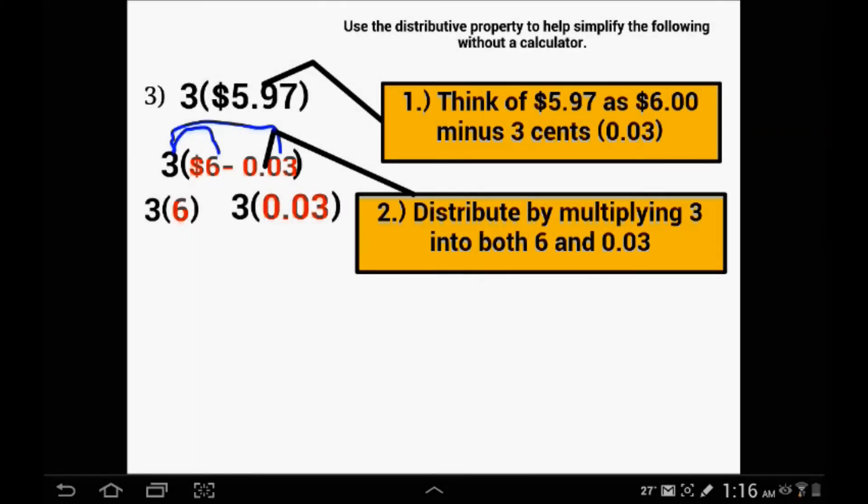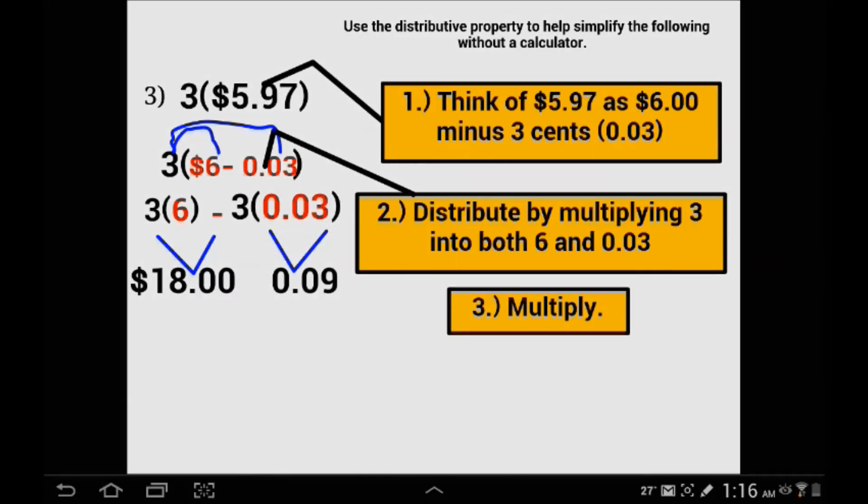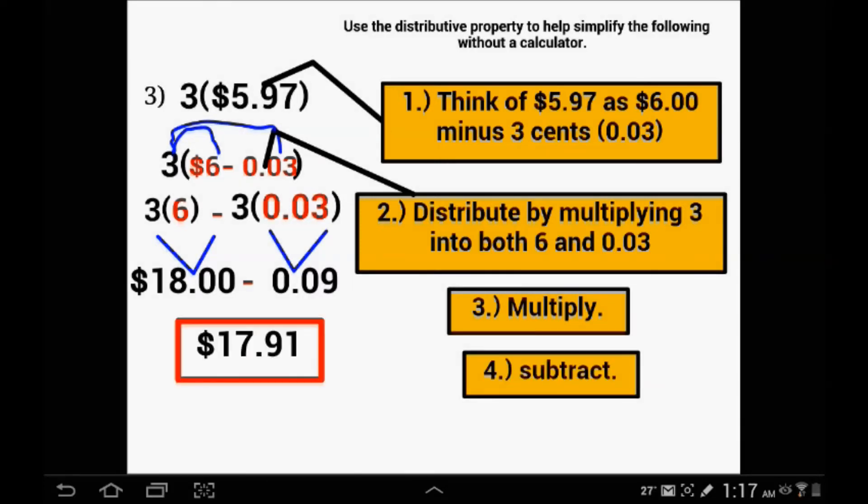We do the arithmetic: 3 times 6 and then 3 times 3 hundredths. 3 times 6 is 18 and then 3 times 3 is 9. But I have to remember, I am doing 3 times 3 cents, which is not 9, it is actually 9 cents. Now you can subtract: 18 minus 9 cents is $17.91.